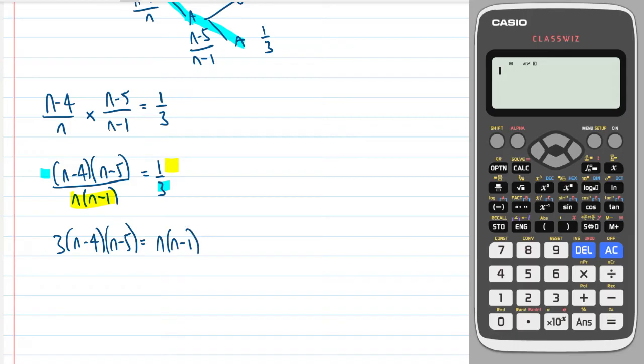Now we need to expand out. So expanding out this bracket is going to give me three lots of n squared minus four n minus five n plus 20. And over here, I'm going to get just n squared minus n.